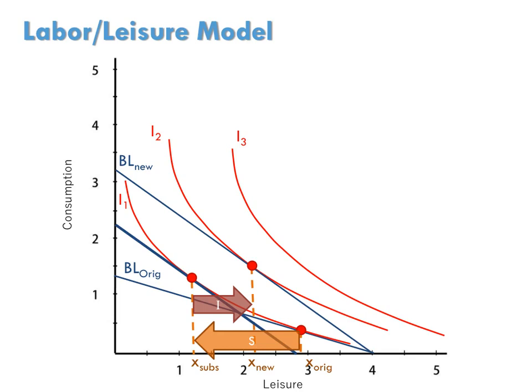What we see here is the case where the substitution effect outweighs the income effect. The voice in the worker's head that says, hey, leisure time's more expensive, outweighs the voice in the consumer head that says, hey, we can afford to spend more time in leisure. And ultimately, what happens when the wage rate goes up is that the consumer will leisure less and therefore work more. In this case, there's a positive relationship between hours of work and the wage rate, giving us an upward sloping labor supply curve.